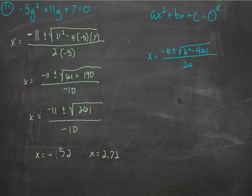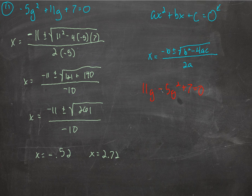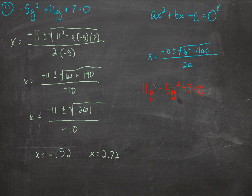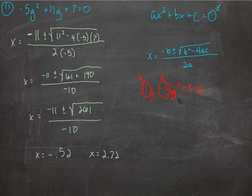Hopefully you get the idea. Even if this were written as 11g minus 5g squared plus 7 equals 0, be careful that you don't make this a, this b, and this c just because you see them in that order from left to right. a is always the number multiplied by g squared or x squared or m squared or whatever. b is always the number multiplied by the variable to the first power. And c is always the constant. Make sure you can always identify a, b, and c.